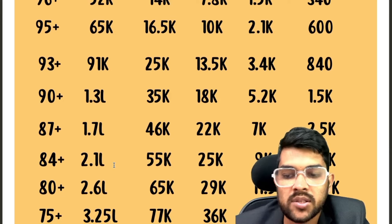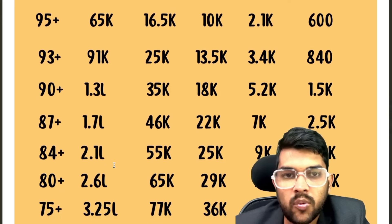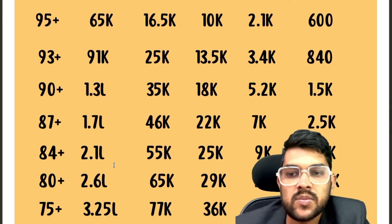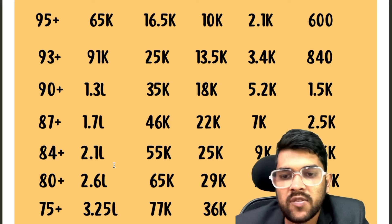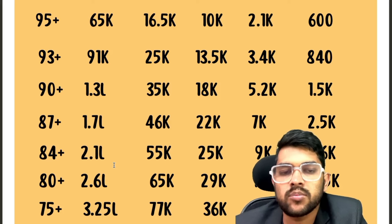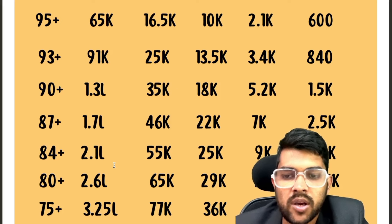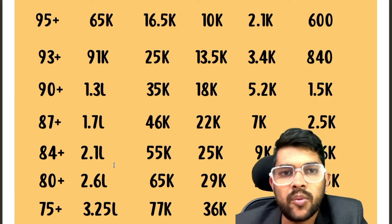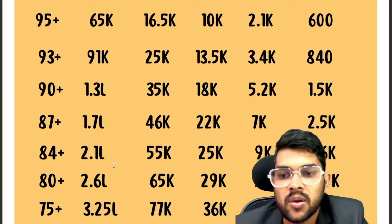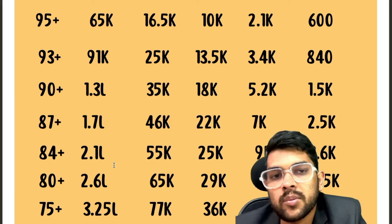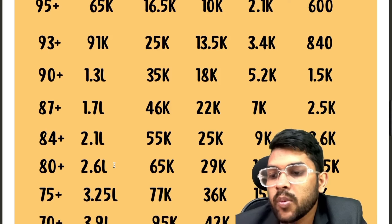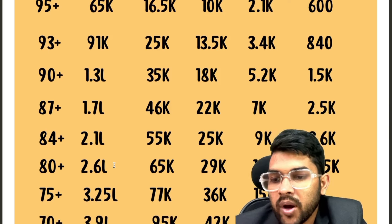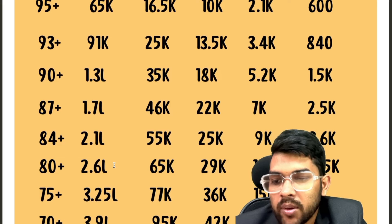For 84 percentile: General 2.1 lakh, OBC 55000, EWS 25000, SC 9000, ST 3600. I have already provided a similar video for JEE Advanced, but I will try to update it. The increase in student numbers won't have much effect on the Advanced since 2.5 lakh students are eligible for it every year.